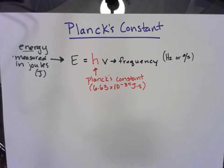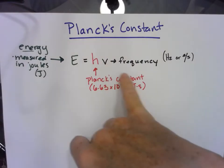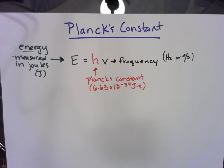The formula is capital E equals lowercase h times v, and this v should look familiar. It is the frequency. We use that variable when we did calculations with speed of light.